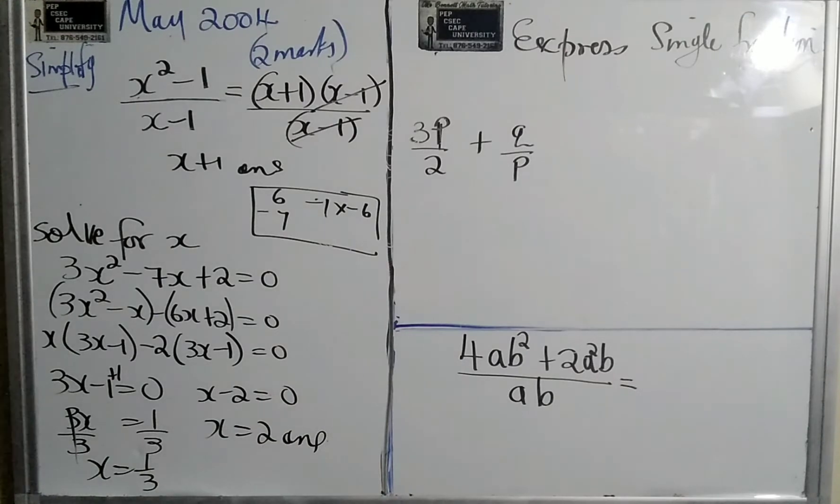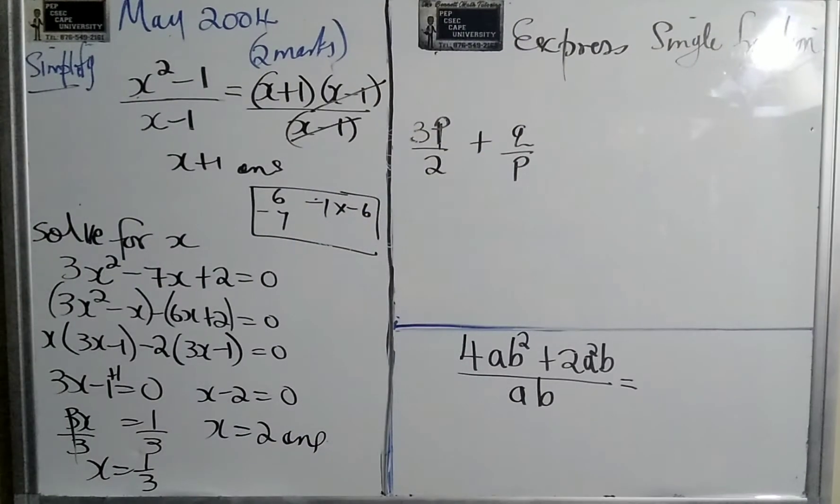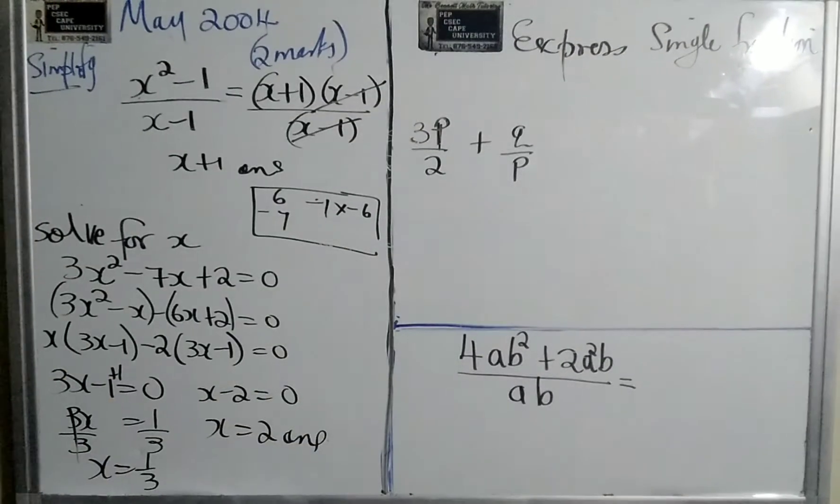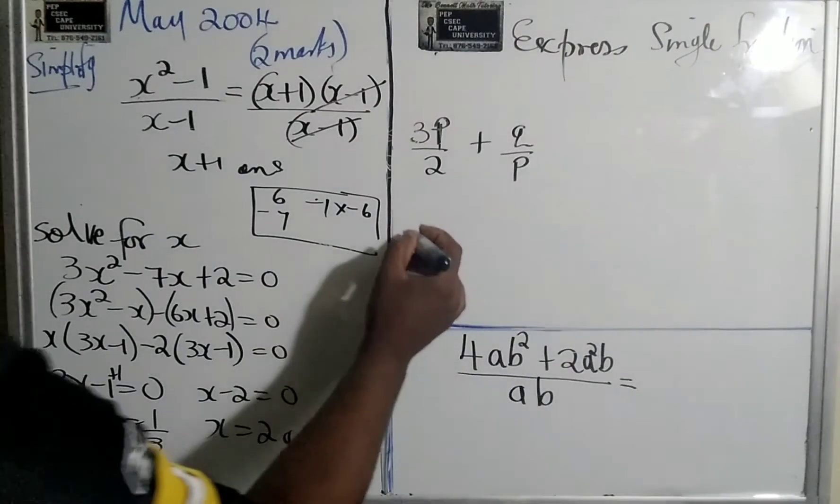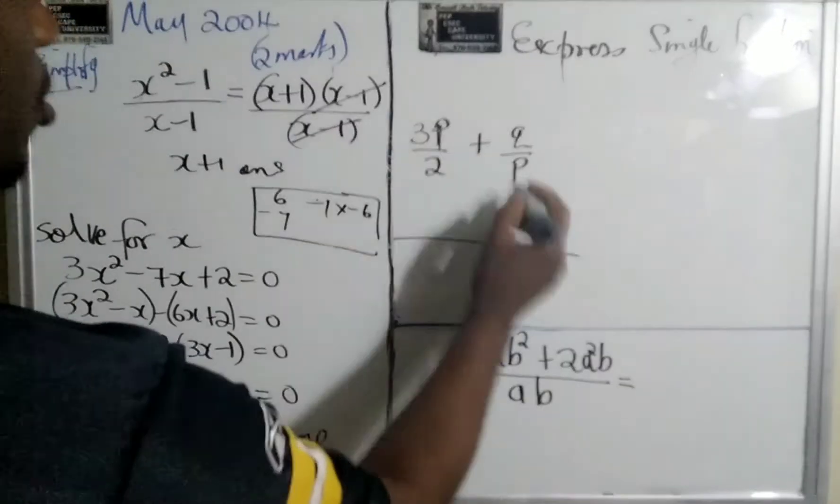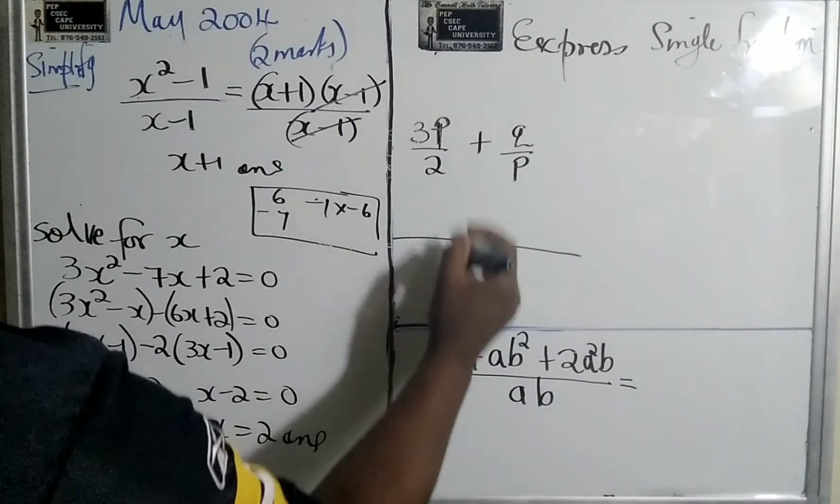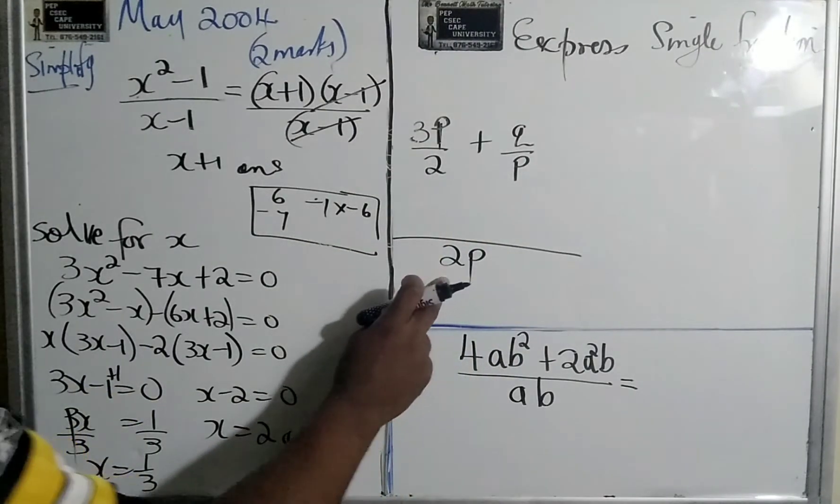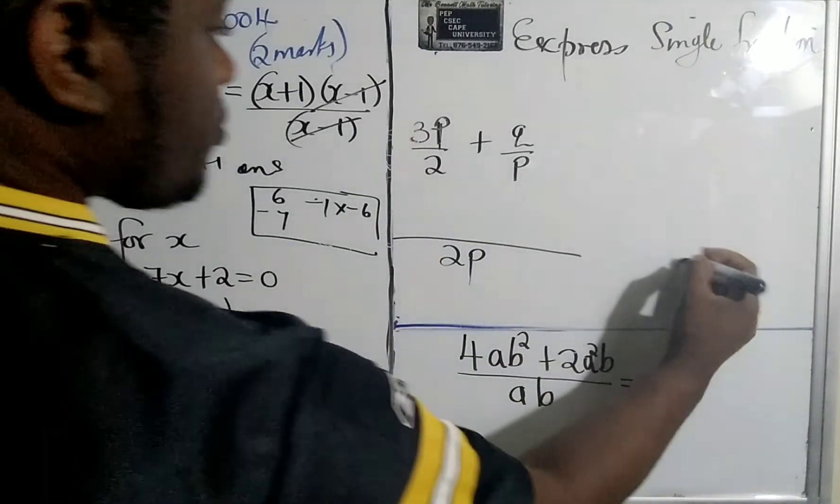Alright, it says express as a single fraction. Now, once we are adding or subtracting a fraction, we must bring it to a common denominator. So this will be the common denominator, which will be 2p. 2 into 2p, we leave the p, right? Just do it quickly.